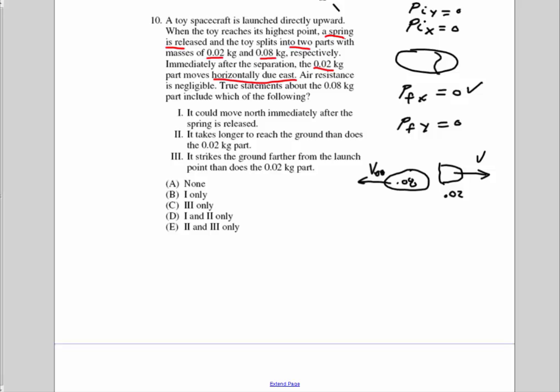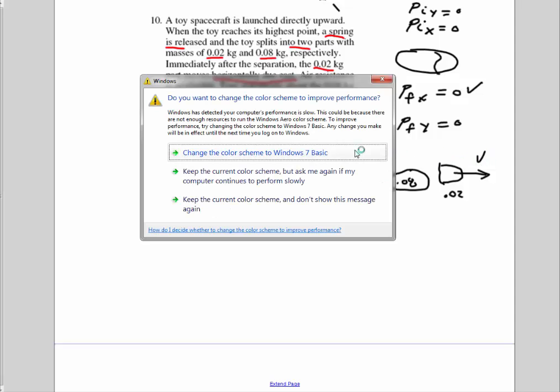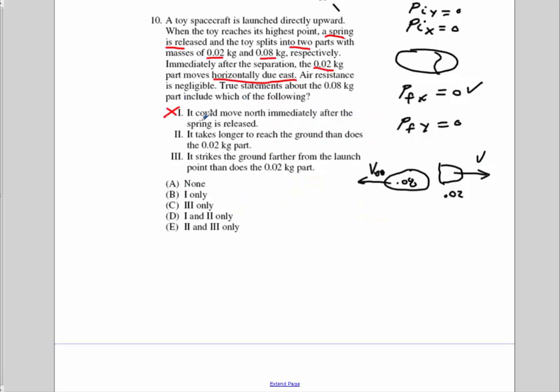When we look back through these answers, number one says it could move north immediately. No, that's incorrect. It cannot move north, because the other piece did not move south. It takes longer to reach the ground. No, because the horizontal velocity has no effect on how long it reaches the ground. It strikes the ground farther from launch point than the .02. That's not correct. The .02 will go further, because it has a greater velocity. So the answer in this case would be A.